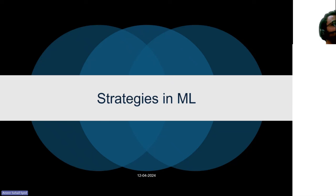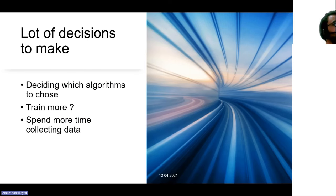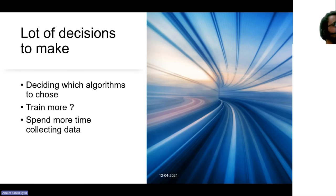Moving on to strategies in ML. As you've seen, I mentioned data a lot, showed lots of columns, mentioned training data, and talked about predicting something. There are multiple questions that come up when working with machine learning. Which algorithm should you use? There are quite many algorithms. One thing is to wisely pick — first decide what type of problem it is, whether regression, classification, or something else. If it is regression, what algorithms might you apply? How much data do you need?